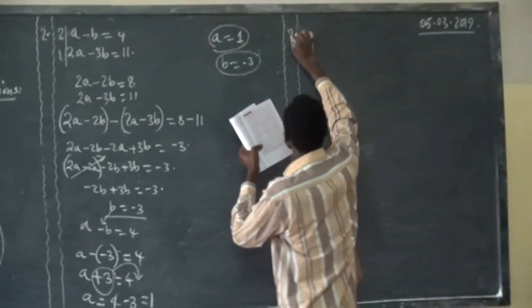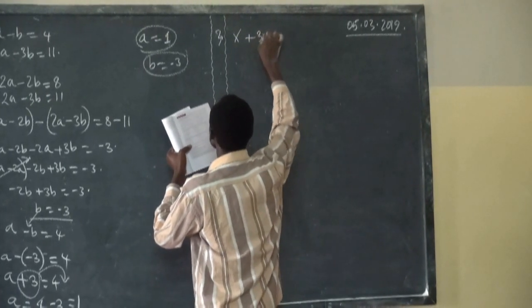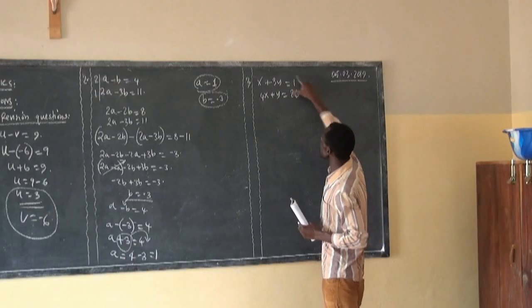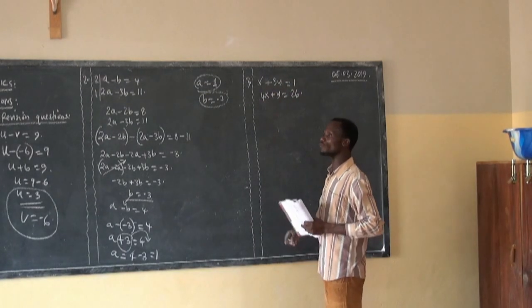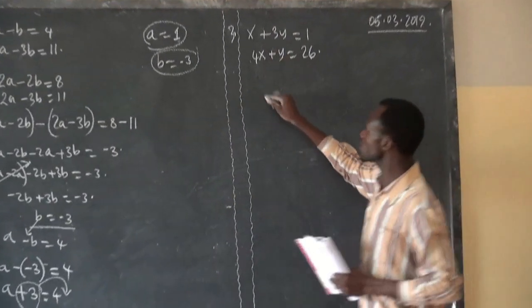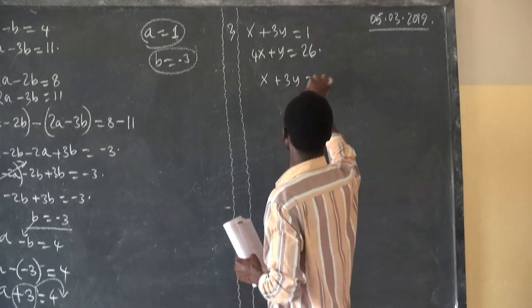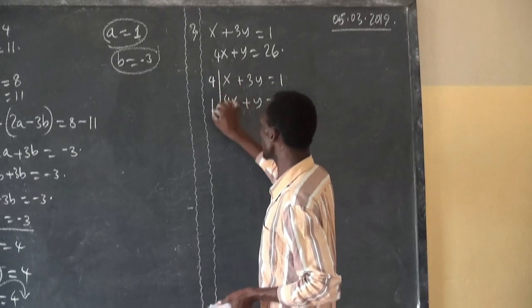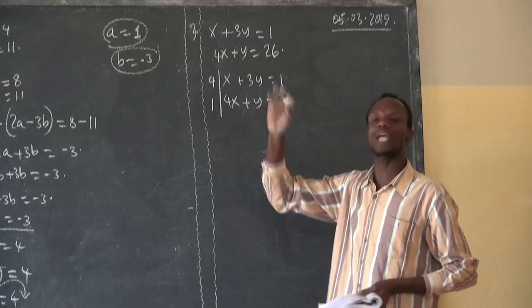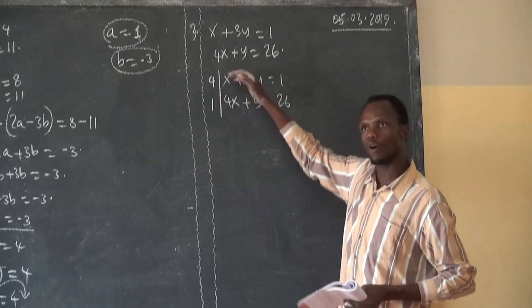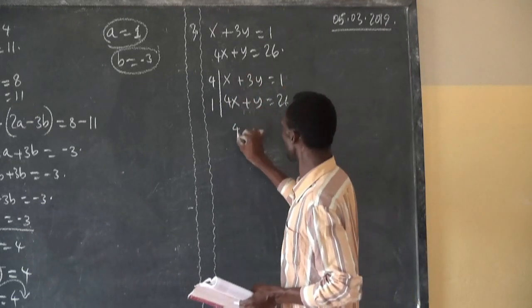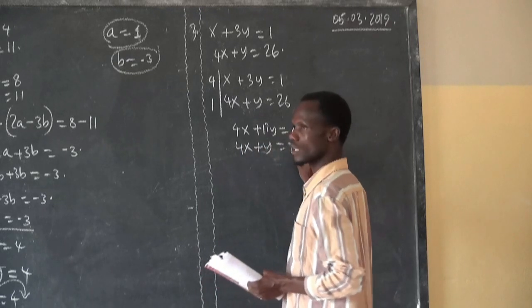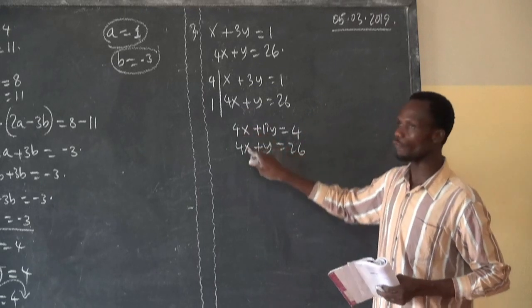Now let us see the third equation: X plus 3Y is equal to 1, and 4X plus Y is equal to 36. Looking at these equations, you won't find any letters with the same coefficient. So we need to interchange. Here the coefficient is 4 and here it is 1. We multiply 4 through the first equation to get: 4X plus 12Y is equal to 4. Then we have 4X plus Y is equal to 26. Now we have letters with the same coefficient, so we can subtract.